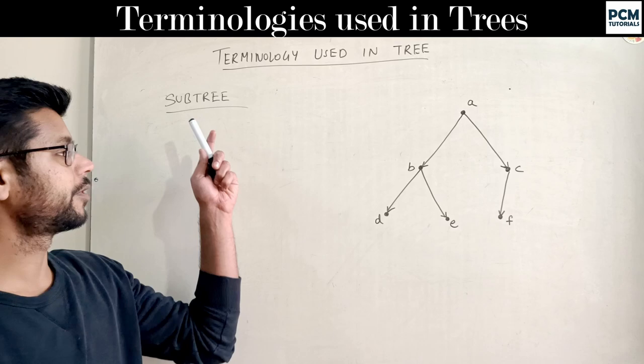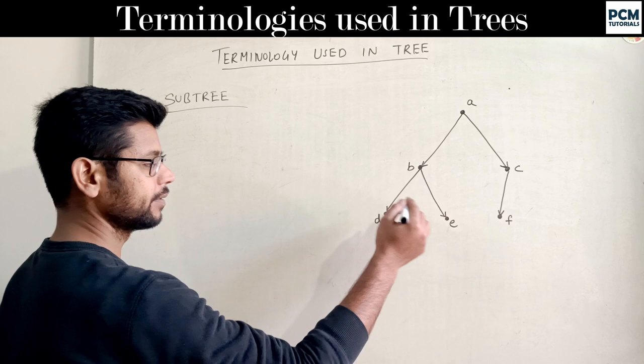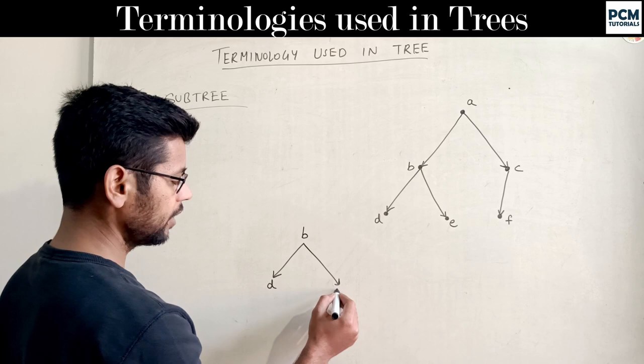The last terminology is subtree. I have a main tree, and within it there is a smaller tree. For example, B's descendants are D and E — we call that portion a subtree.